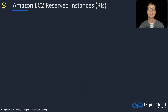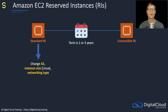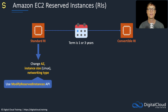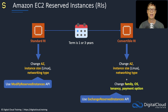Let's look at reserved instances in more detail. The term is one year or three years. You have a standard RI and a convertible RI. The standard RI allows you to change availability zones, instance size (if Linux), and networking type using the Modify Reserved Instances API action. With a convertible RI, you can also change the AZ, instance size for Linux, and networking type, but additionally you can change the family, operating system, tenancy, and payment option, using the Exchange Reserved Instance API action.